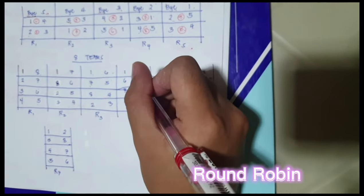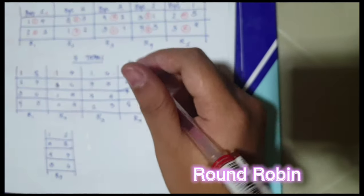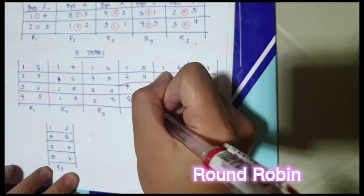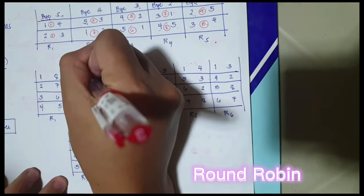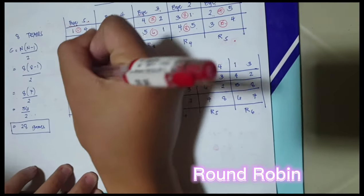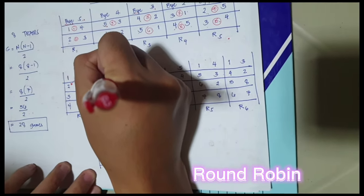Then for the next round, 1, 6, 7, 8, 2, 3, 4, 5. Arrow here.